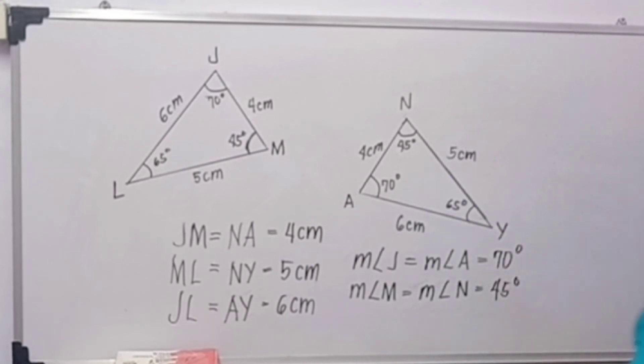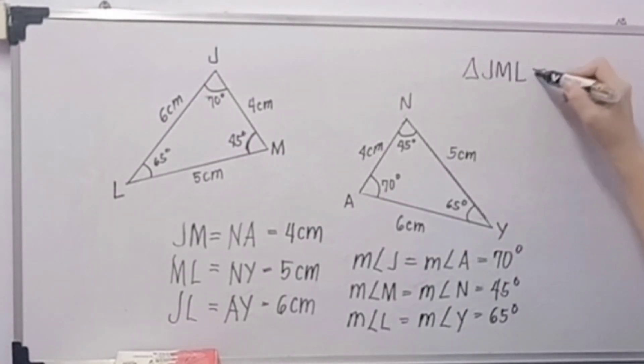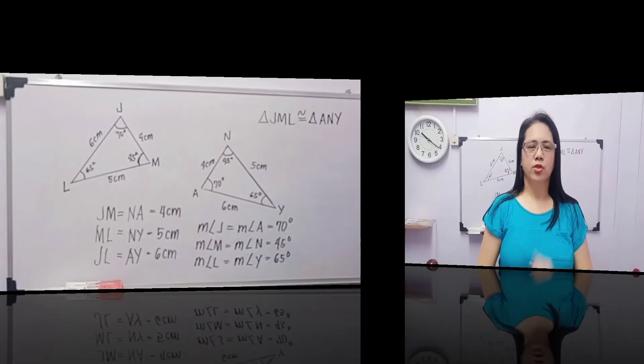And the last angle, measure of angle L is equal to measure of angle Y, which is equal to 65 degrees. Therefore, we can say that triangle JML is congruent to triangle ANY.